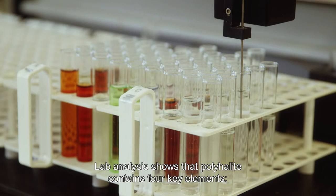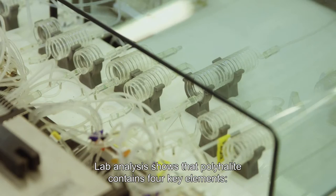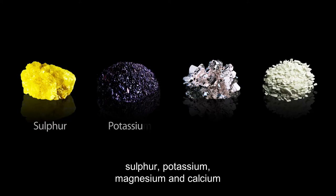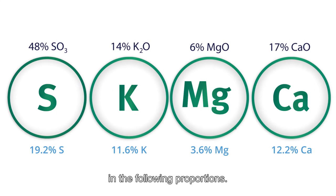Lab analysis shows that polyhalite contains four key elements: sulfur, potassium, magnesium, and calcium, in the following proportions.